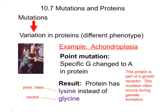Welcome back, and today we're talking about mutations and proteins as part of a process of gene expression. But as a quick review, remember that mutations can lead to variation in proteins, which is actually the different phenotype. When we have a different protein, that is the beginning level of a different or a change in the phenotype.